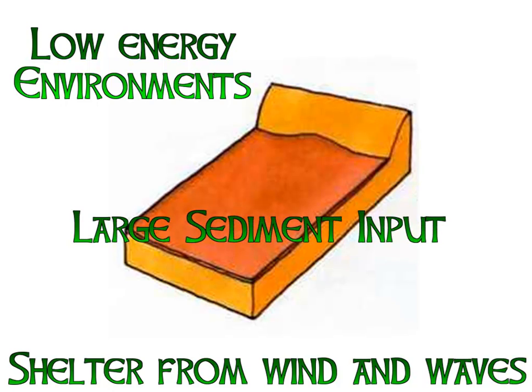For a salt marsh to form you need a large input of sediment, which can arrive from the sea and rivers. The most likely place along a coastline where you're going to get this sort of sediment input is near a tidal flat. The tidal flat has a low gradient, which means that any rivers that flow into it will quite quickly deposit any sediment they're transporting.